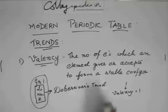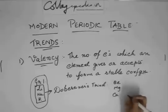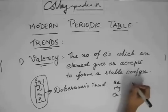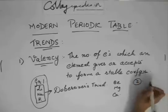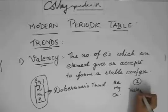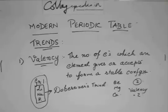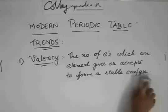And similarly, if you take group two, you have beryllium, magnesium, calcium. They also have two electrons in the outermost shell. So, their valency would be two.